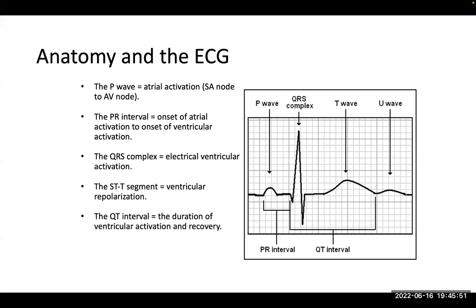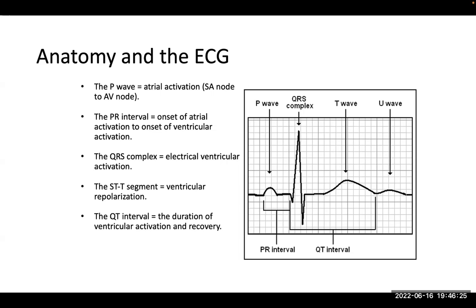The PR segment is from the end of P wave to the beginning of QRS — different from PR interval. Each has a different meaning: PR interval is very important when it comes to electrophysiology and heart blocks; PR segment becomes important in pericarditis where you usually get PR segment depression. The PR interval tells you how much time it takes electricity to be generated in the atrium and travel all the way to the ventricles including the AV node delay. It should not be more than 200 milliseconds — if it is, we talk of prolonged PR interval.